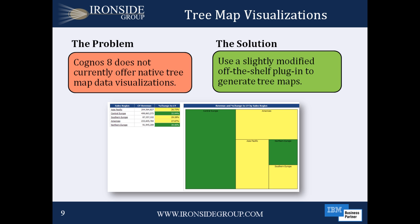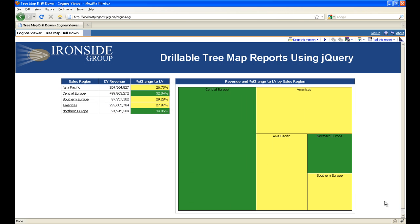In our second example, we want to implement a treemap style data visualization that can be used to quickly and easily show the relative value of rows within a dataset. To do so, we took a plugin from the jQuery plugin library and modified it slightly to work within Cognos Viewer. As you can see, using our off-the-shelf plugin, we can render a treemap object based on a Cognos List object.